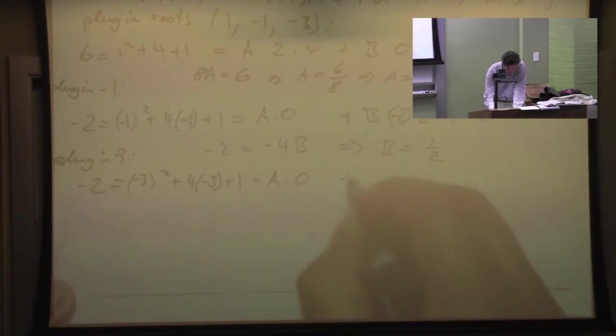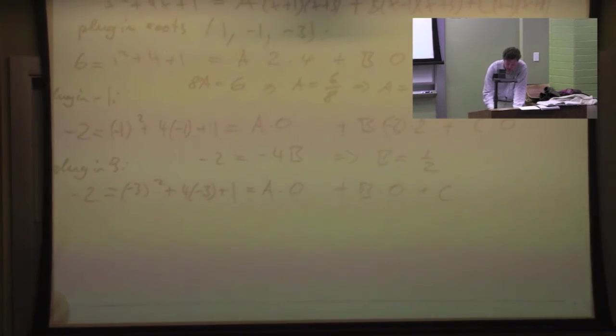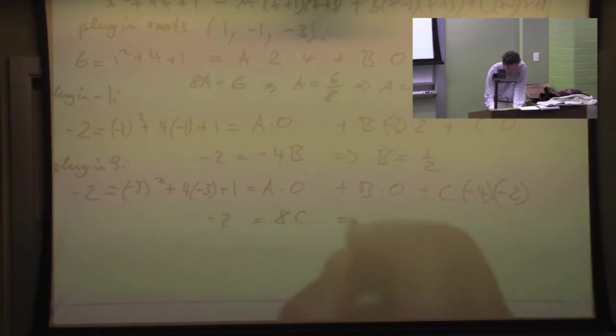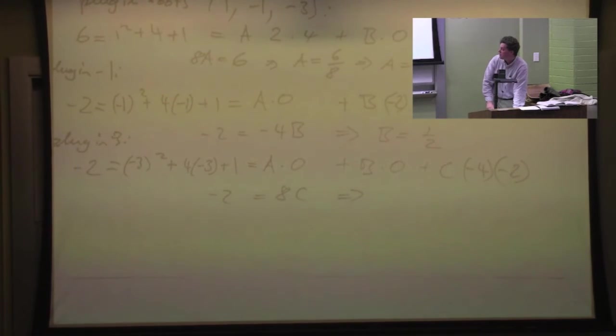The A term goes away. The B term goes away. But the C term is, so minus 3 minus 1 is minus 4. Minus 3 plus 1 minus 2. So we got negative 2 equals 8C. And from there we got C is equal to negative 1 fourth.